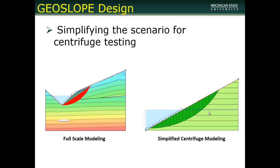The red indicates our expected failure plane. We simplified these slopes down and generated a representative material, then reapplied the water. To the right you can see our simplified centrifuge model, which still includes the water, and you can see our new failure plane in green.